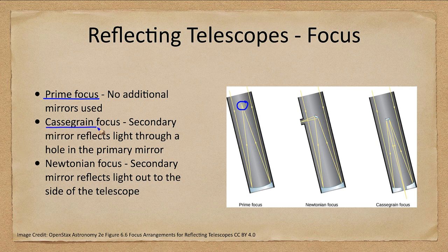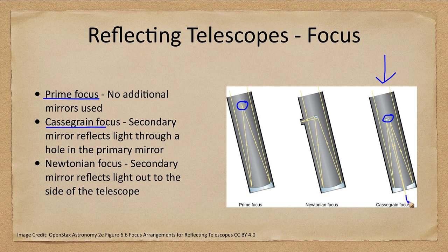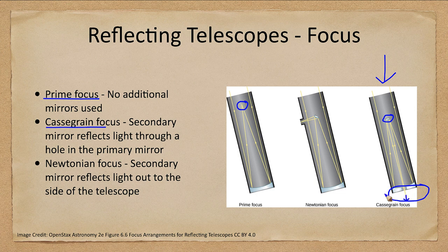We also have the Cassegrain focus. Here the light bounces off the primary mirror back up to the secondary mirror and then back down through a hole in the primary mirror, brought to a focus past that. This is convenient because you can put instruments at the bottom of the mirror, where all the weight of the telescope is, making it easier to keep the whole system stable.